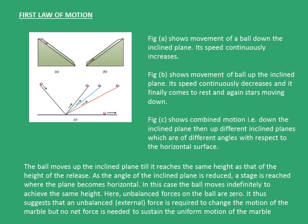The third figure combines both of these motions. In this case, the ball is released from a certain height on first inclined plane, and it encounters the second plane and moves upwards on the second one. What is seen is, the ball moves up the inclined plane till it reaches the same height as that of the height of release.